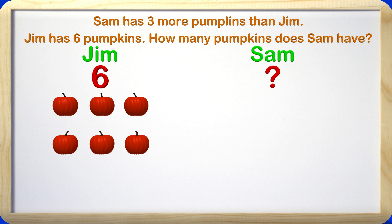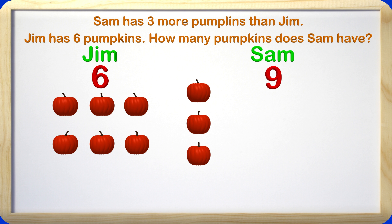Here is another problem. Sam has 3 more pumpkins than Jim. Jim has 6 pumpkins. How many pumpkins does Sam have? We know Jim has 6 pumpkins, but we don't know how many pumpkins Sam has. The question says Sam has 3 more, so we are going to add 3 more pumpkins. Now we can count on from Jim's pumpkins — Jim had 6 and we count on from 6: 7, 8, 9. Sam has 9 pumpkins, which is 3 more than Jim does.